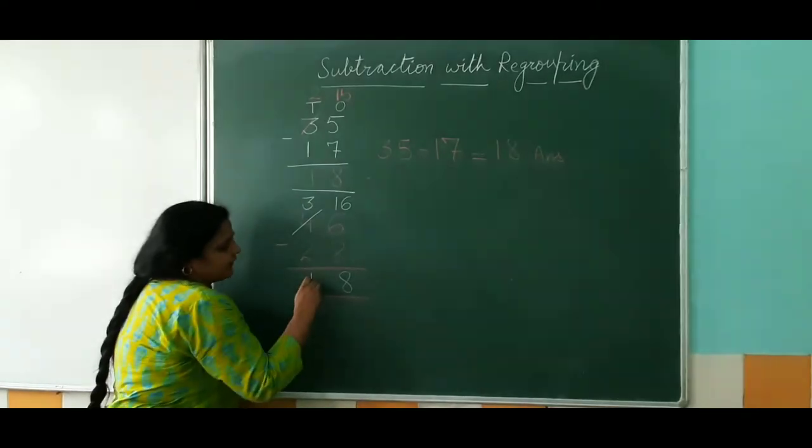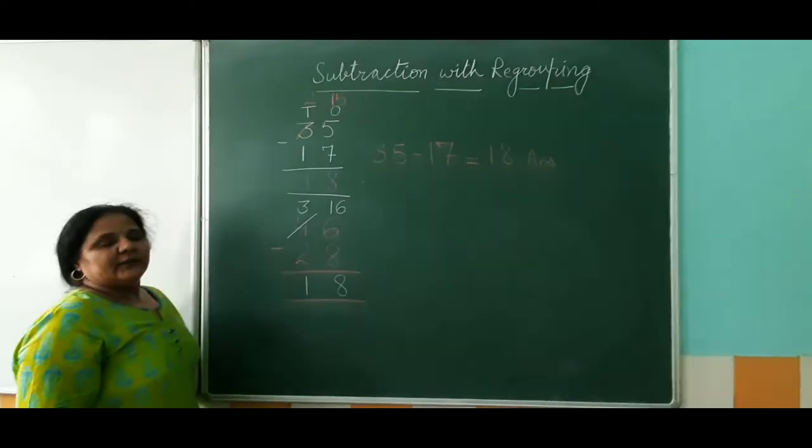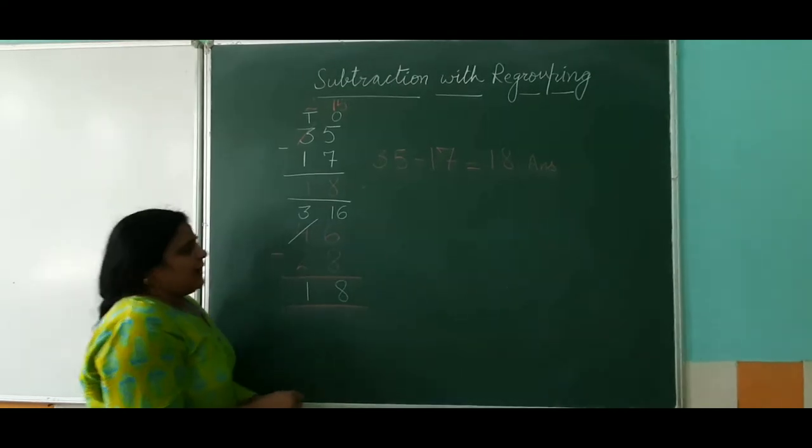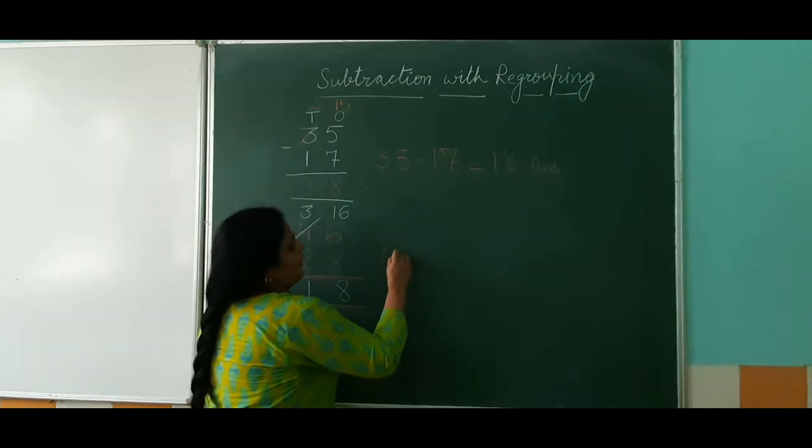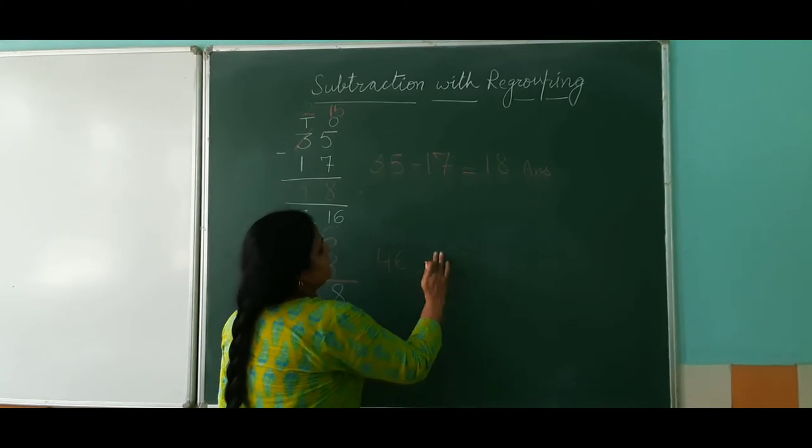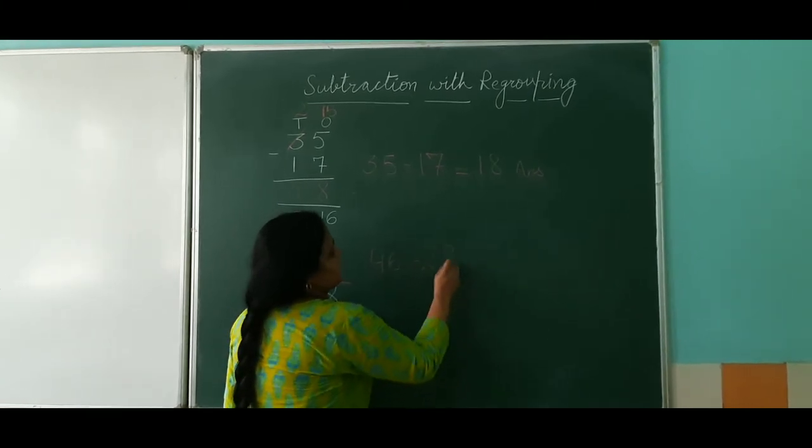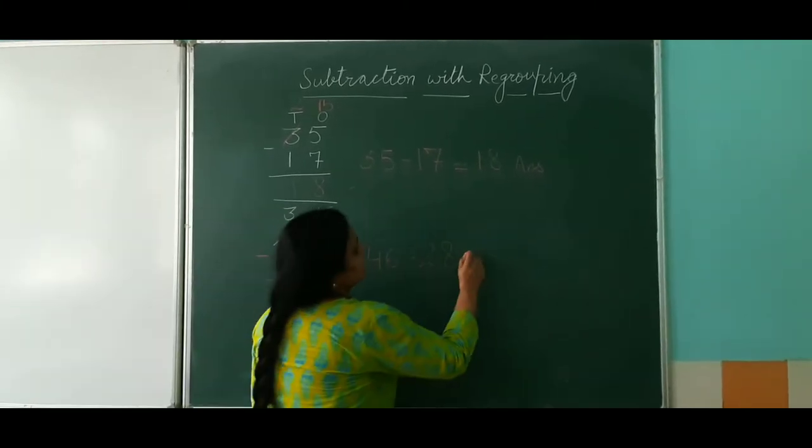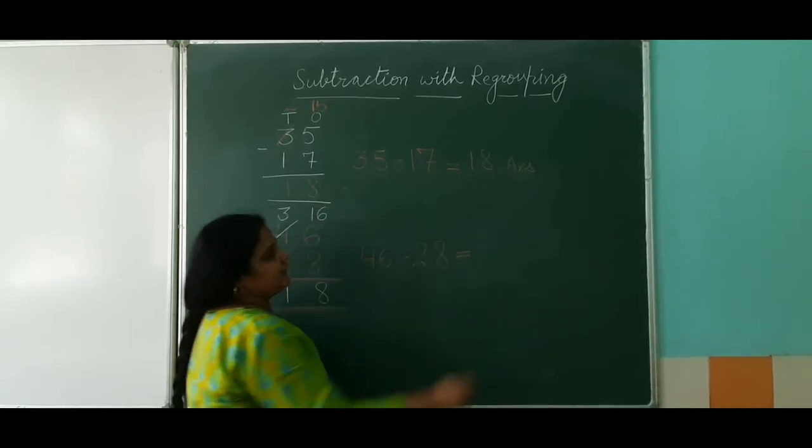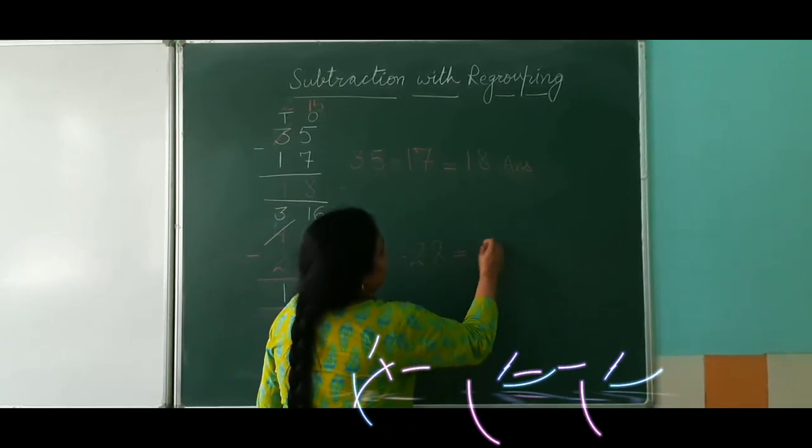So again our answer is 18. Out of 46 chocolates when we have given to 28 students, how many chocolates are left? It is only again 18.